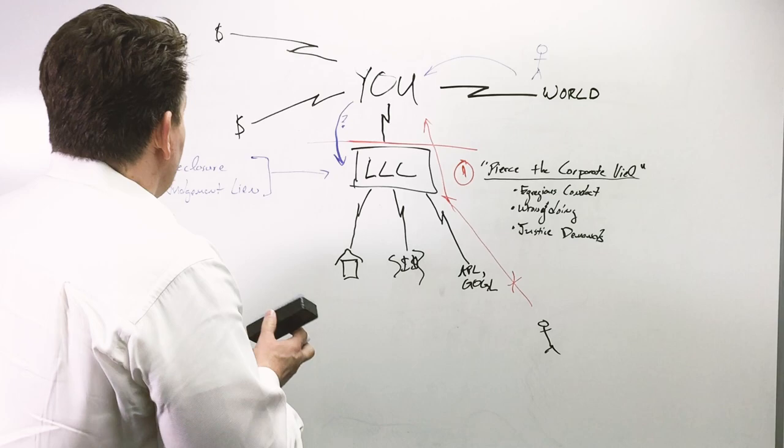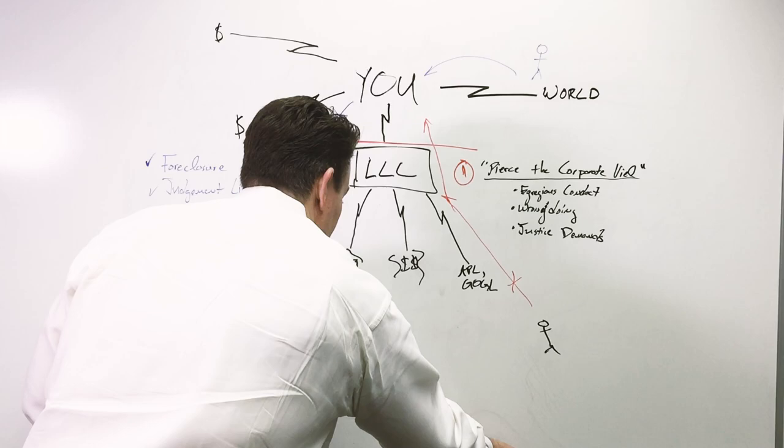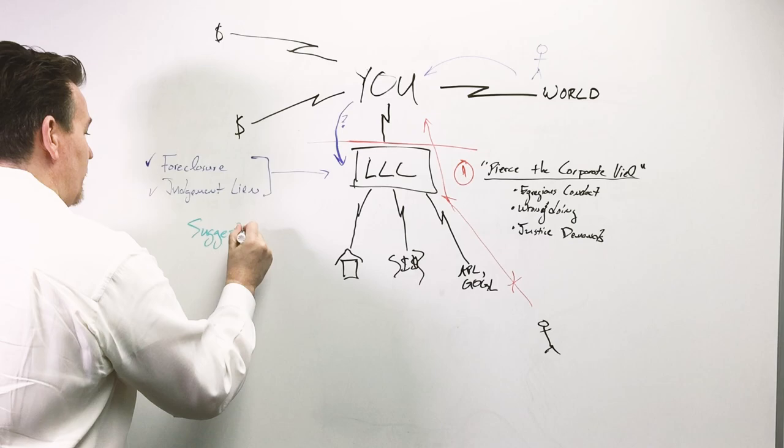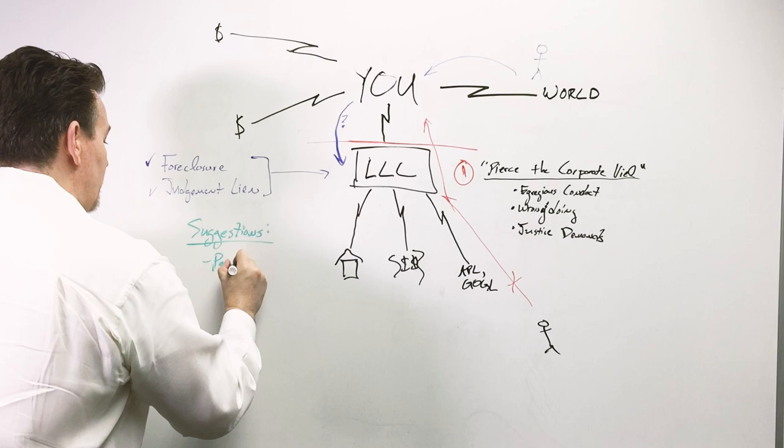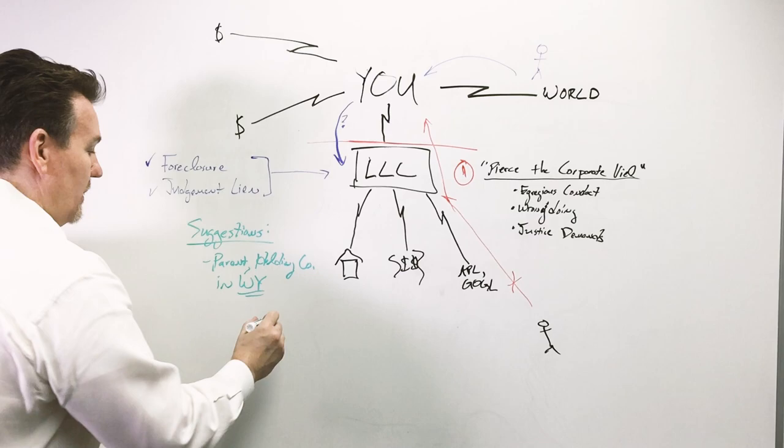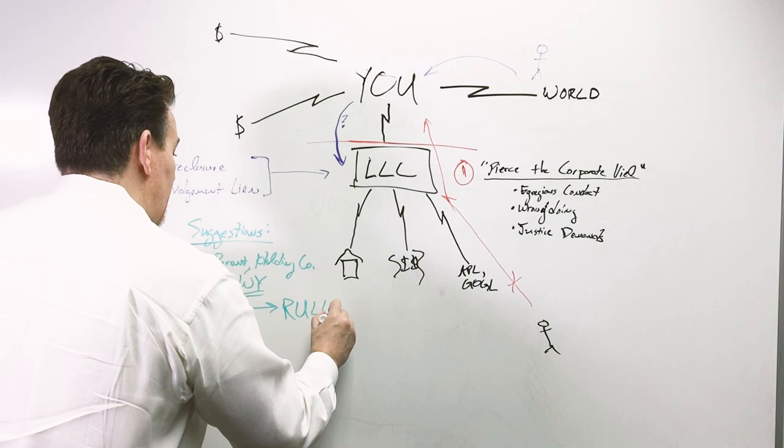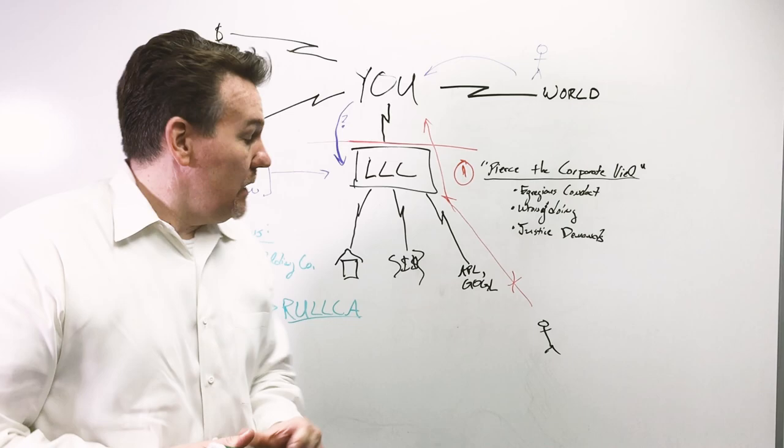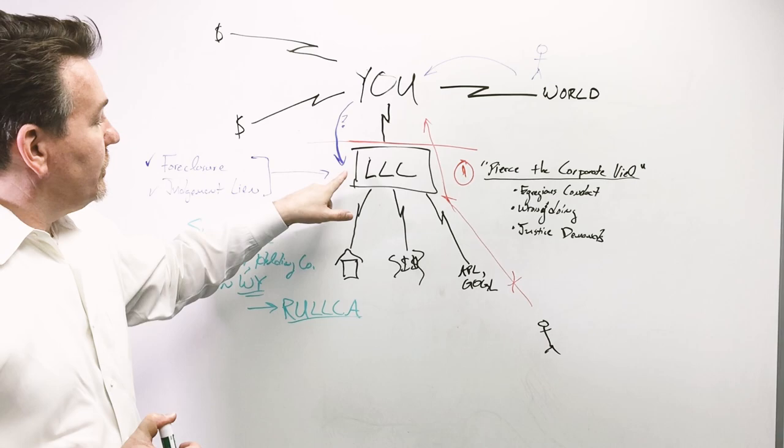What would be some suggestions? One would be you have a parent holding company in Wyoming. Why Wyoming? Because Wyoming has passed what's called the Revised Uniform Limited Liability Company Act, RULLCA, that was specifically written to prevent or make it harder to do judgment liens and foreclosures on an LLC.